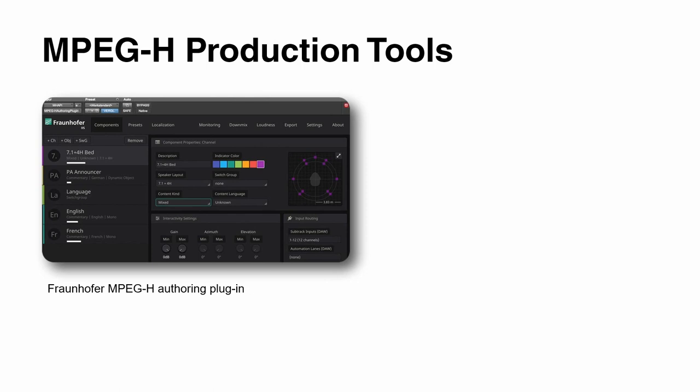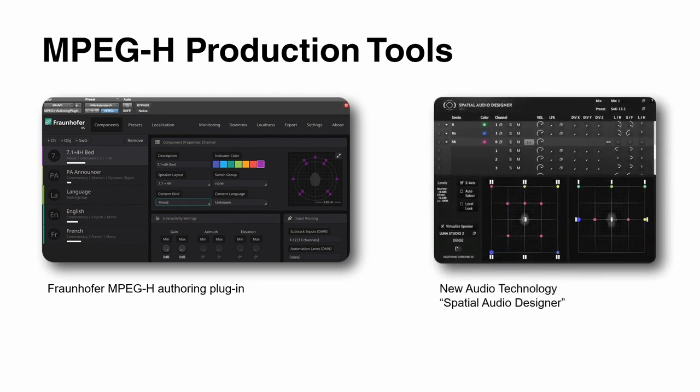When we look at the MPEG-H production tools, there are not as many available as Auro 3D or Dolby Atmos, but some are available. For instance, you can make use of the Fraunhofer MPEG-H authoring plugin suite from the Fraunhofer Institute itself — you can sign up on their website to be eligible to use those plugins. Or you can use the Spatial Audio Designer plugin from New Audio Technology, a Hamburg-based company. Spatial Audio Designer is a format-independent renderer environment usable with any speaker layout, and it has an MPEG-H output path, so you can export directly as an MPEG-H file or delivery format.